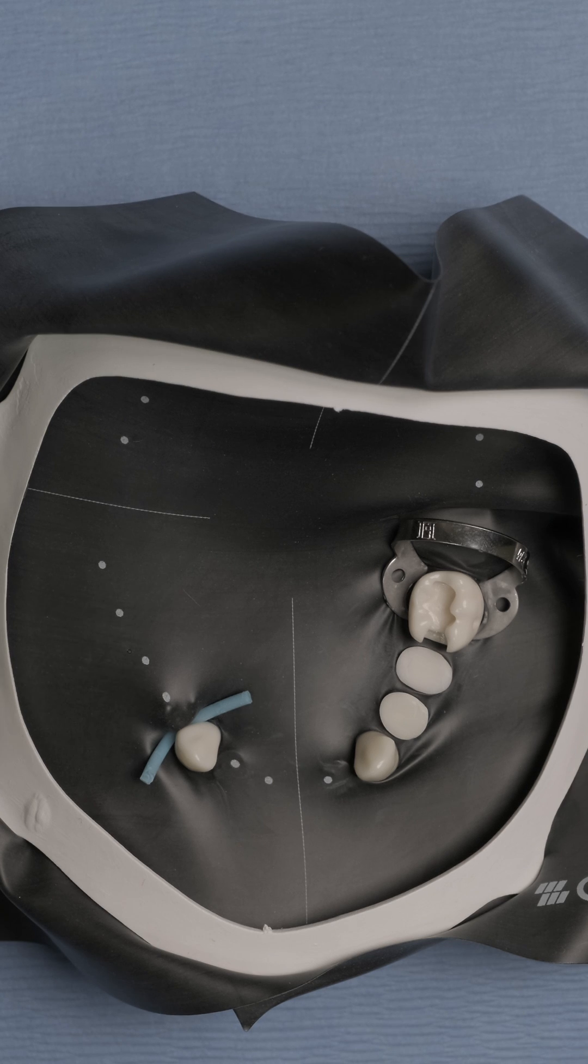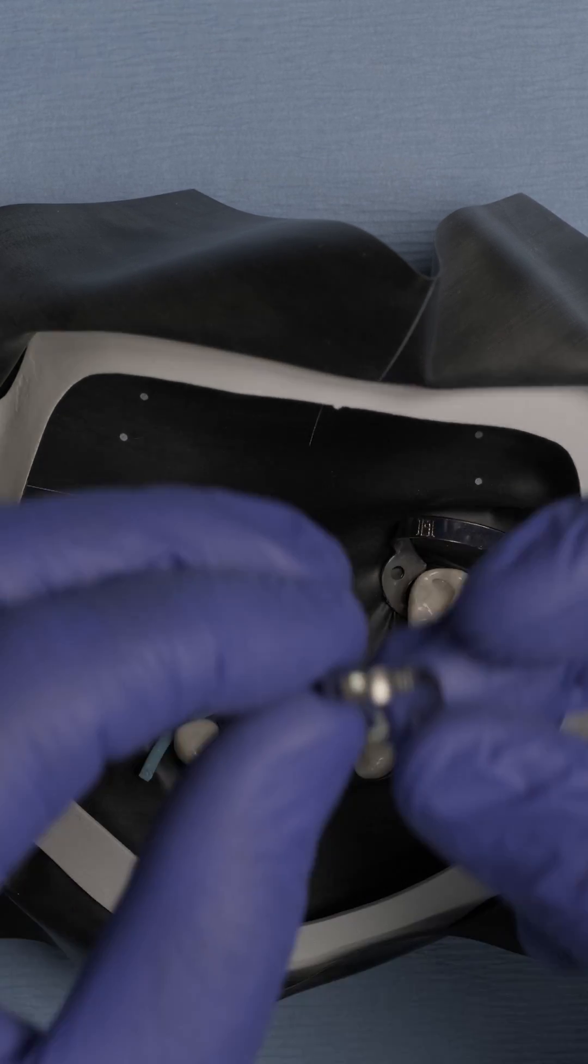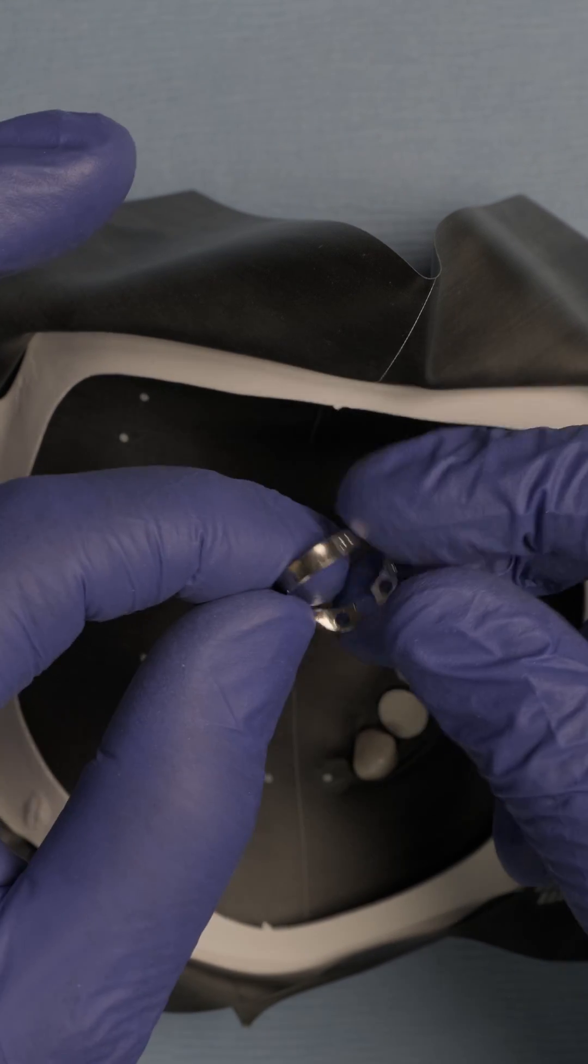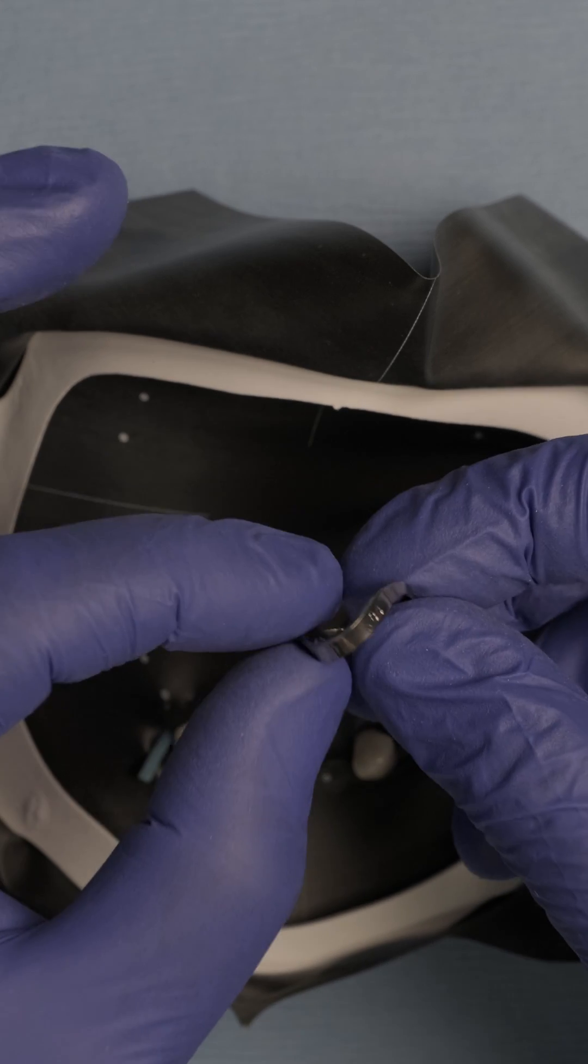Now, I still need additional isolation and this is when this beautiful clamp, the B4 clamp that comes out of the Brinker kit from Colteam comes into play.